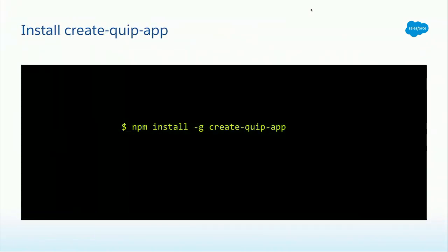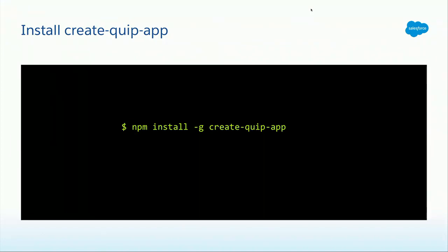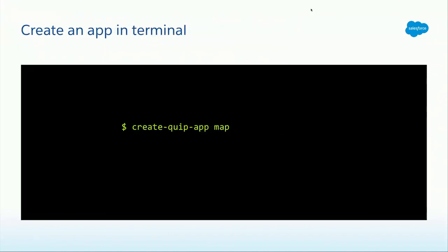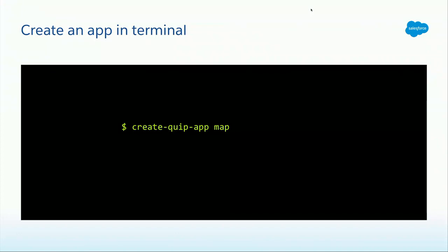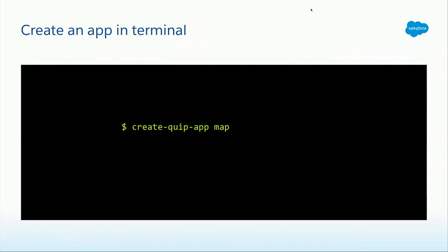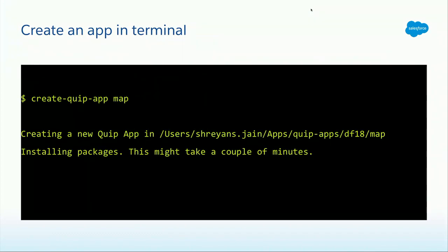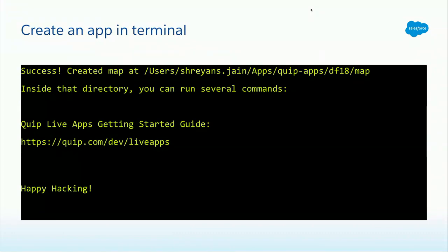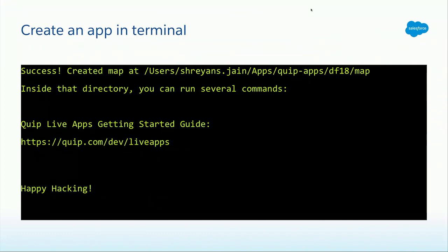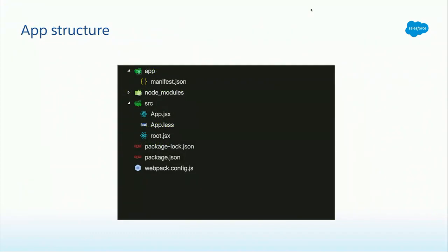Now we'll minimize the browser window, open up a terminal, and use NPM to install Create Quip App. I use the -g flag because I want this tool to be available globally. Next, it's time to use this newly installed tool — so I'll call create-quip-app, and since we are creating a mapping live application, let's call it map. When you hit enter, you'll see a new live app is being created at that location. If all goes well, you'll see a success screen with a link to the latest documentation. Let's close the terminal and open up a code editor — here is the newly created live app with a bunch of different folders and files.